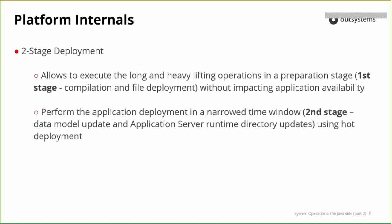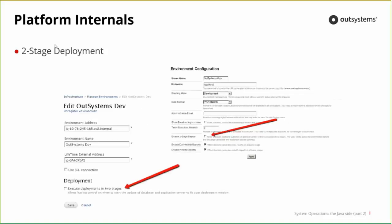The two-stage deployment allows you to do all the heavy lifting beforehand, then pause the deployment so you have a window where you can deploy to production with less impact on users — and do that in a much shorter second-stage window. This can be enabled in either Lifetime or Service Center, and is enabled or disabled per environment — so you can have it enabled on production but not on development. On development you want to publish and test right away; on production you might want to start publishing at the beginning of the day and only switch over at the end when fewer people are using the system.